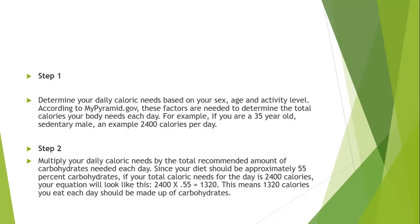In practice, the patient might have other complications, NCDs, and blood report findings that tell a different story, so we must manipulate and customize the diet chart. A single diet chart is not for everyone, even if they suffer the same disease — it should be customized. Step 2: Multiply your daily caloric needs by the recommended proportion of carbohydrates. Since your diet should be approximately 55% carbohydrate, if your total caloric need is 2400 calories, the equation is: 2400 × 0.55 = 1320. This means 1320 calories each day should come from carbohydrates.